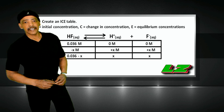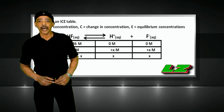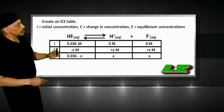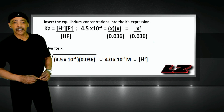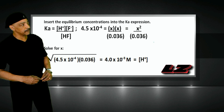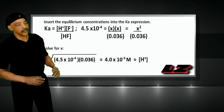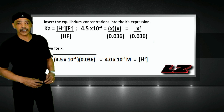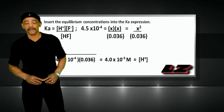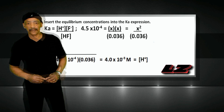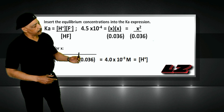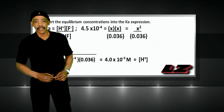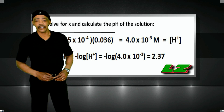Since this is a weak acid and the Ka value is so small, I made the assumption that X was negligible. Putting the information into the Ka expression, with X being negligible as part of the concentration of the acid at equilibrium, the Ka value equals the concentration of H-plus times F-minus divided by 0.036. Solving for X generates a value of 4.0 times 10 to the minus 3, which represents the molarity of the hydrogen ion, and the pH of the solution is 2.37.